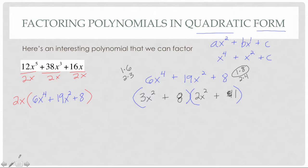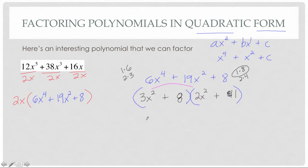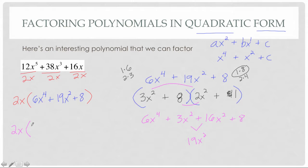I picked 3x² and 2x², then found that constants 8 and 1 give the right middle term. We can verify: 3x²·2x² = 6x⁴; 3x²·1 = 3x²; 8·2x² = 16x²; 8·1 = 8. The middle terms add up to 19x². So the full factored form is 2x(3x² + 8)(2x² + 1). We factored the trinomial into three parts. That's factoring in quadratic form — we just covered sections 9.1, 9.2, and 9.3.